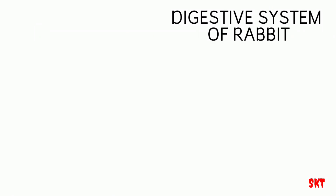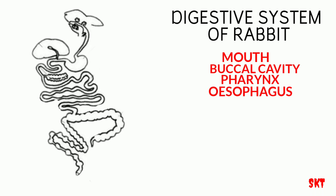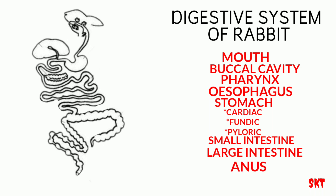The digestive system of rabbit starts with the mouth and continues with buccal cavity, pharynx, esophagus and into the stomach which has three parts: the cardiac, fundic and pyloric stomach. Then into the small intestine having anterior duodenum, jejunum and ileum, and into the large intestine which consists of the cecum and colon, and into the rectum, passing out through the anus.